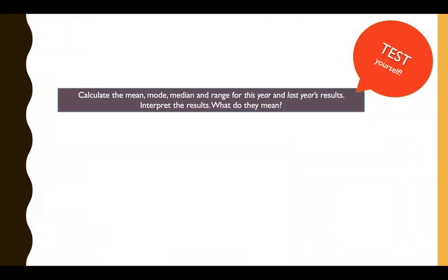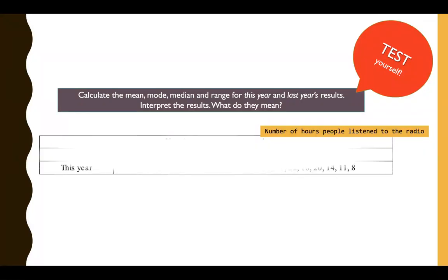Now to test yourself, you see the table here again and you're going to calculate the mean, mode, median, and range for this year and last year's. But also, you're going to interpret the results. What do they mean when you talk about these different hours that you saw just now from each calculation? What does that mean? Why would it be that certain calculations give you different results? And what do you think it means for a market researcher to interpret?